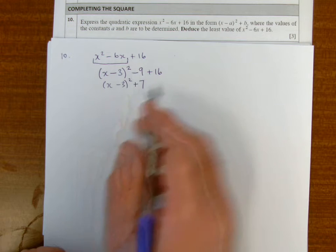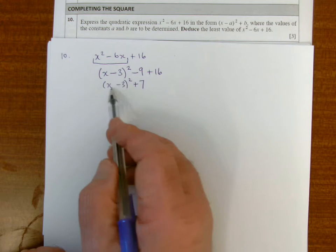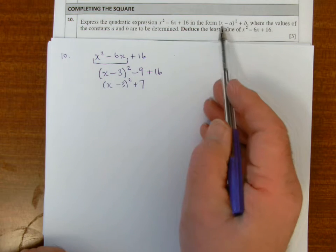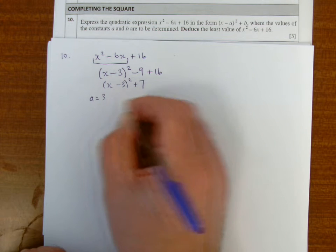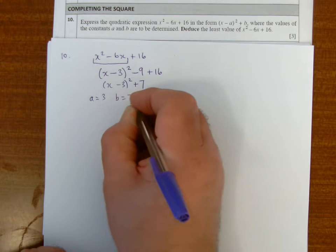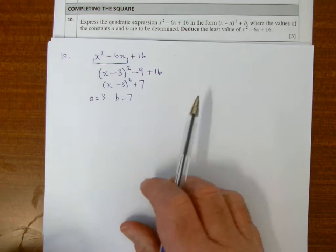So in this question, a and b have to be determined, so comparing that expression with the expression in the question, I see that a is equal to 3 and b is equal to 7. Now it says deduce the least value.